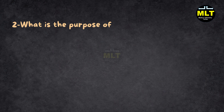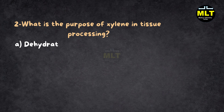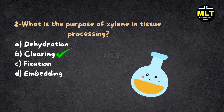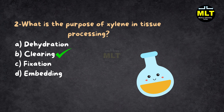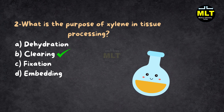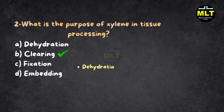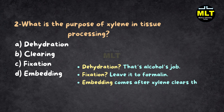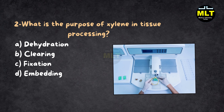Question 2: What is the purpose of xylene in tissue processing? Options: A. Dehydration, B. Clearing, C. Fixation, D. Embedding. Correct answer: B. Clearing. Explanation: Xylene is the clean-up agent in tissue processing. It replaces alcohol, making tissues transparent for paraffin embedding. Dehydration is alcohol's job, fixation is formalin's role, and embedding comes after xylene clears the path. It's like the backstage crew before the tissue's big debut.